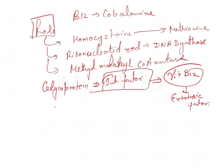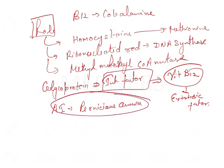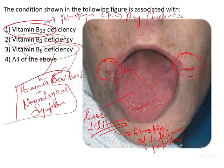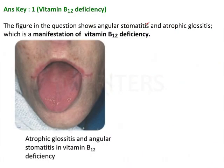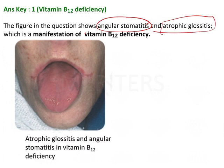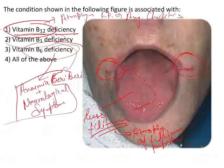There is an autoimmune disease known as pernicious anemia, in which Vitamin B12 is not able to be absorbed by the cells because Castle's intrinsic factor is not produced from the parietal cells. That is why the patient develops pernicious anemia. So going back to the question — the figure shows angular chelitis or angular stomatitis along with atrophic glossitis, which is the manifestation of Vitamin B12 deficiency. Hence the answer is option one.